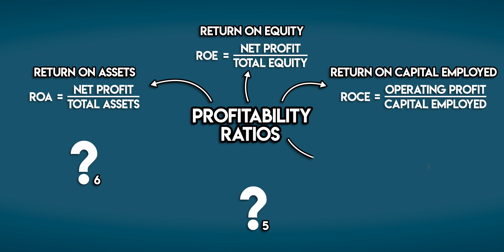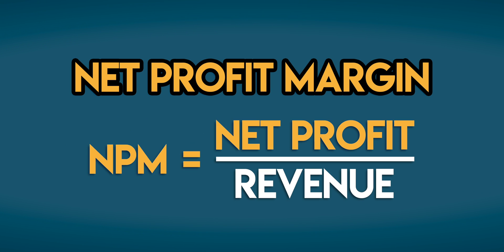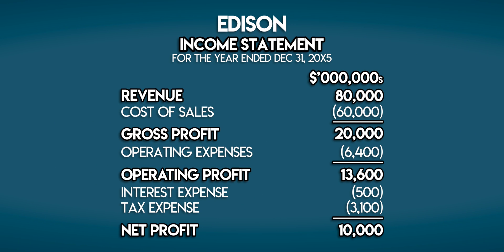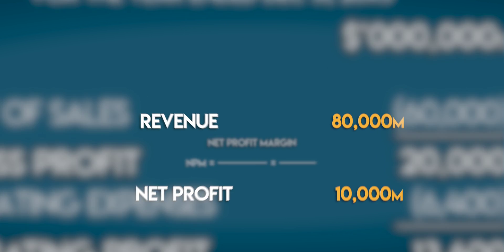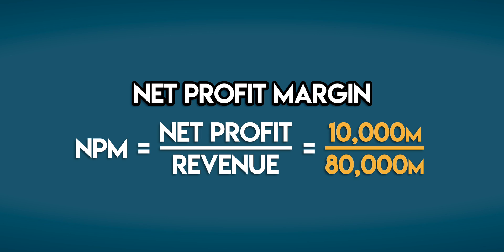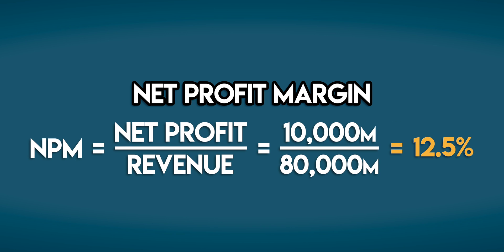Onward to number four: net profit margin. Net profit margin is equal to net profit divided by revenue. This is our first margin ratio — margin ratios are nice and simple because we can get all of our numbers from the income statement. Edison's revenue for the year is 80 billion dollars, and net profit is 10 billion dollars. Dividing 10 billion by 80 billion gives us a net profit margin of 12.5 percent.